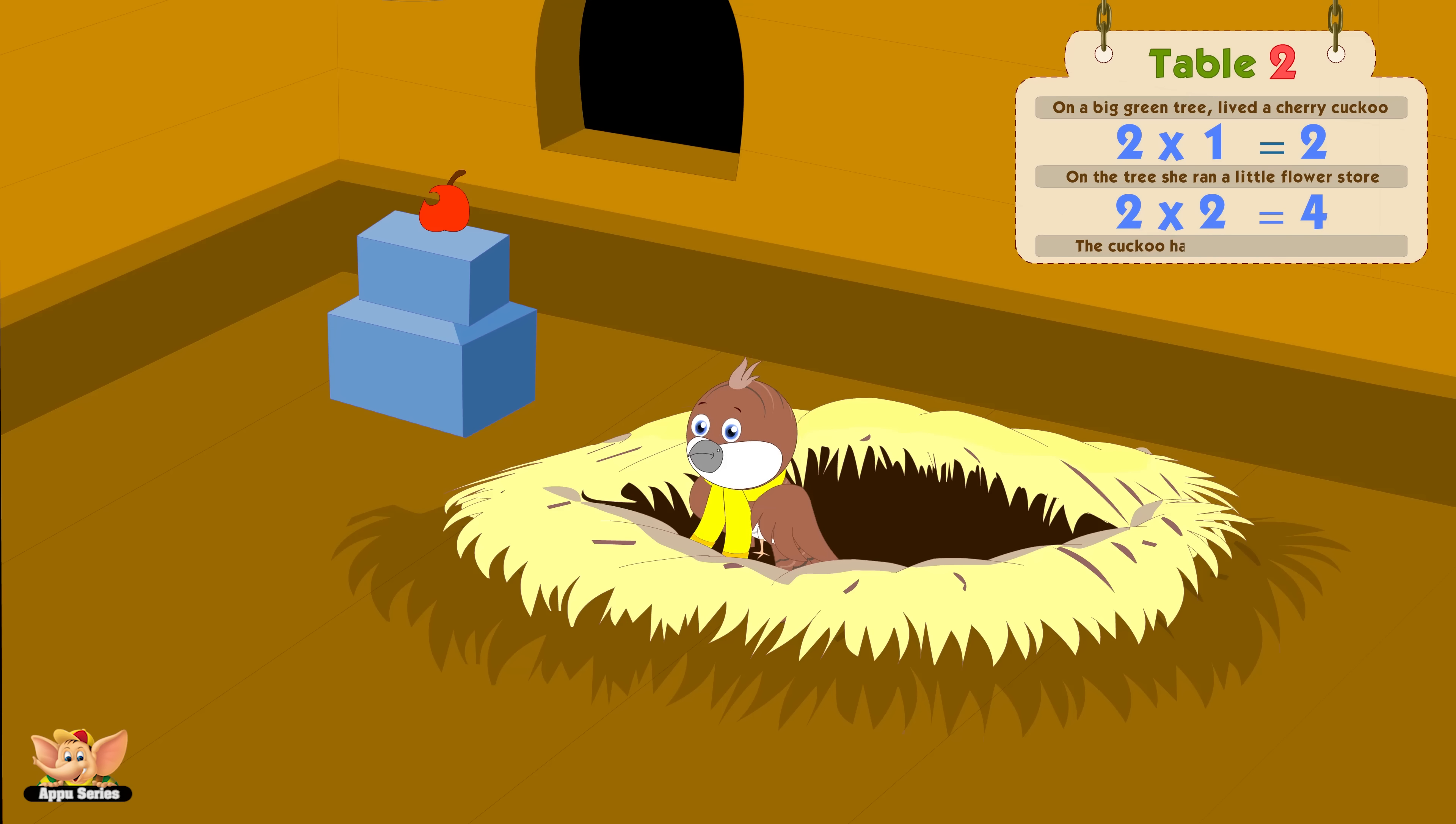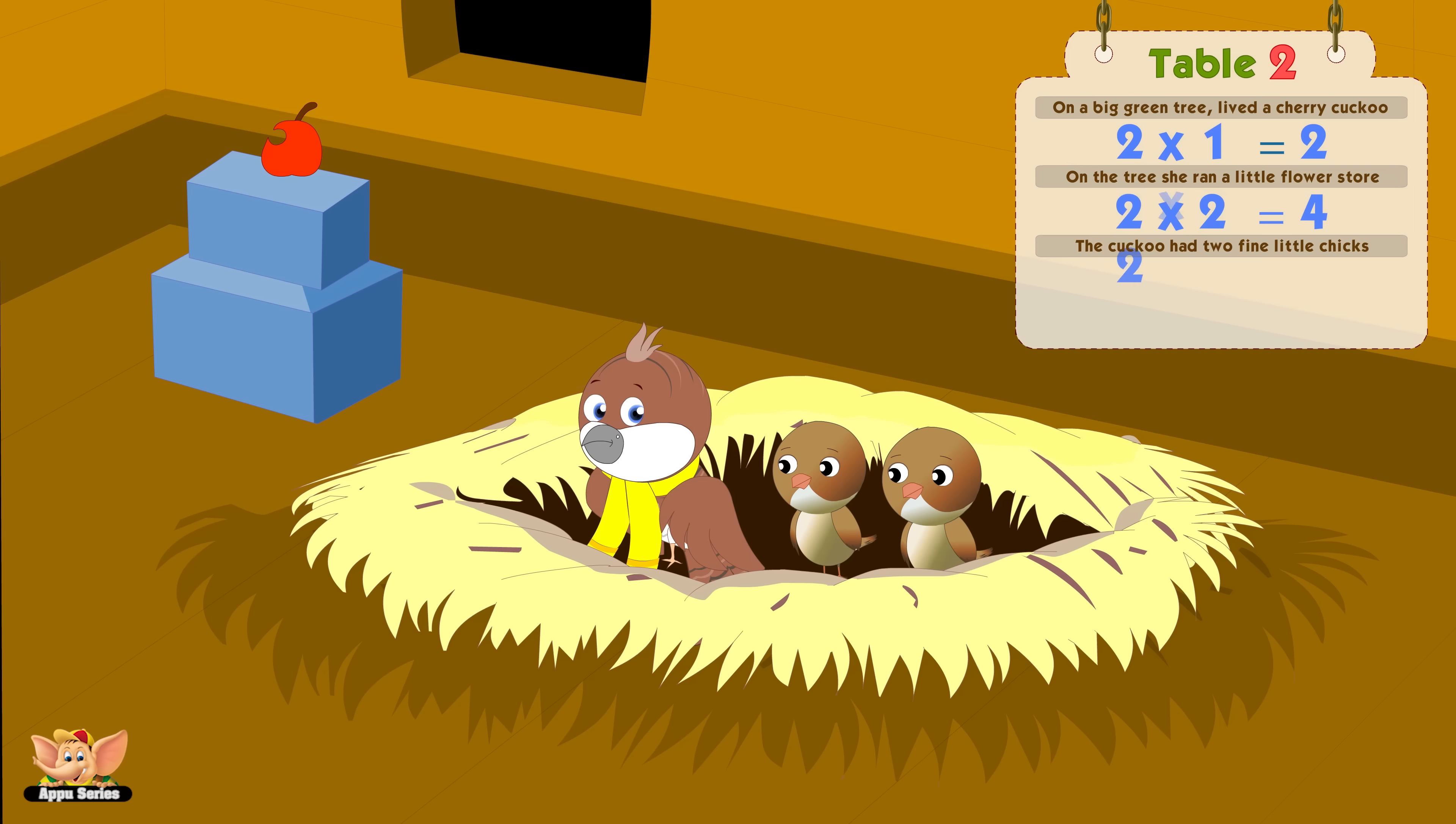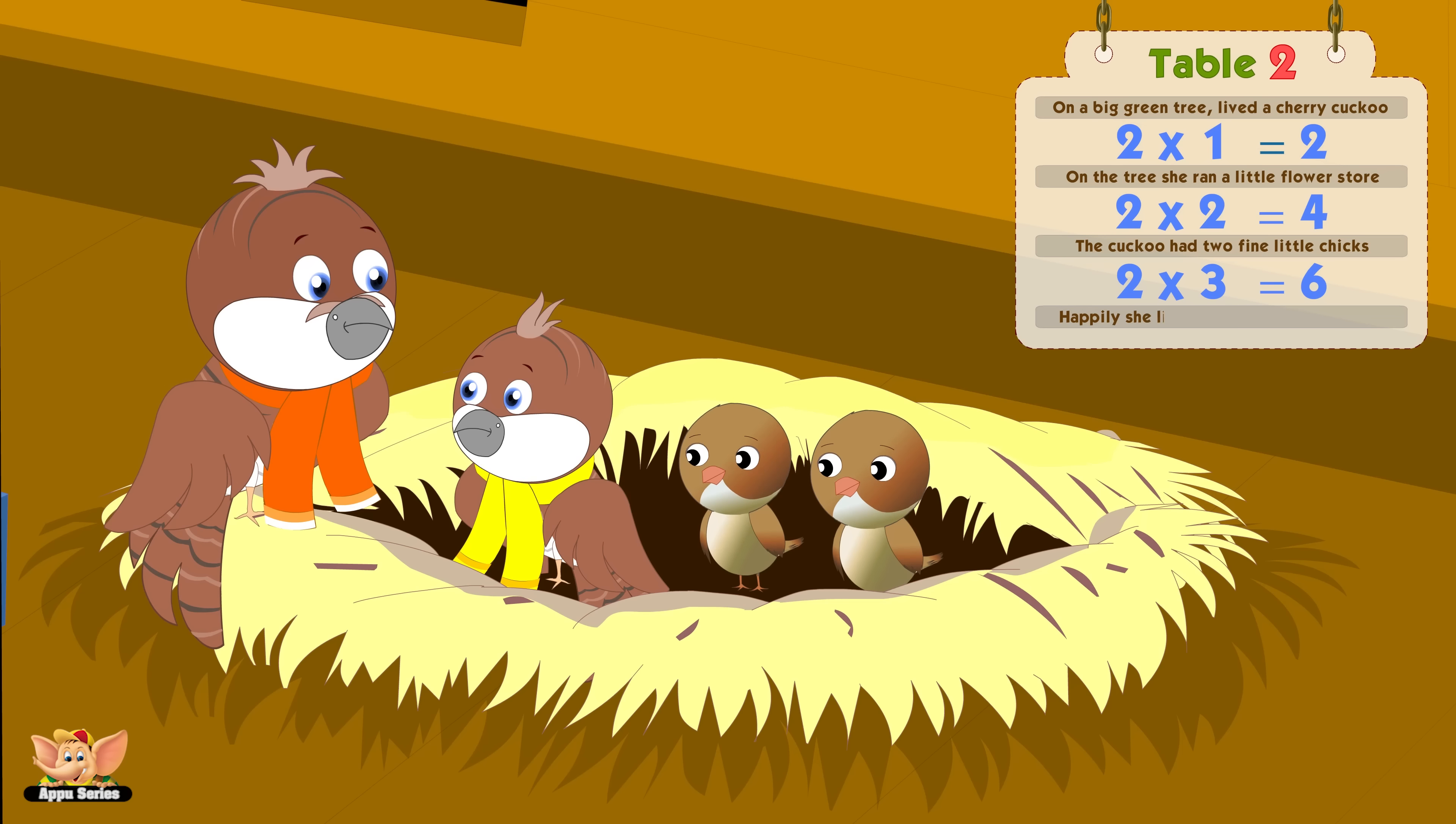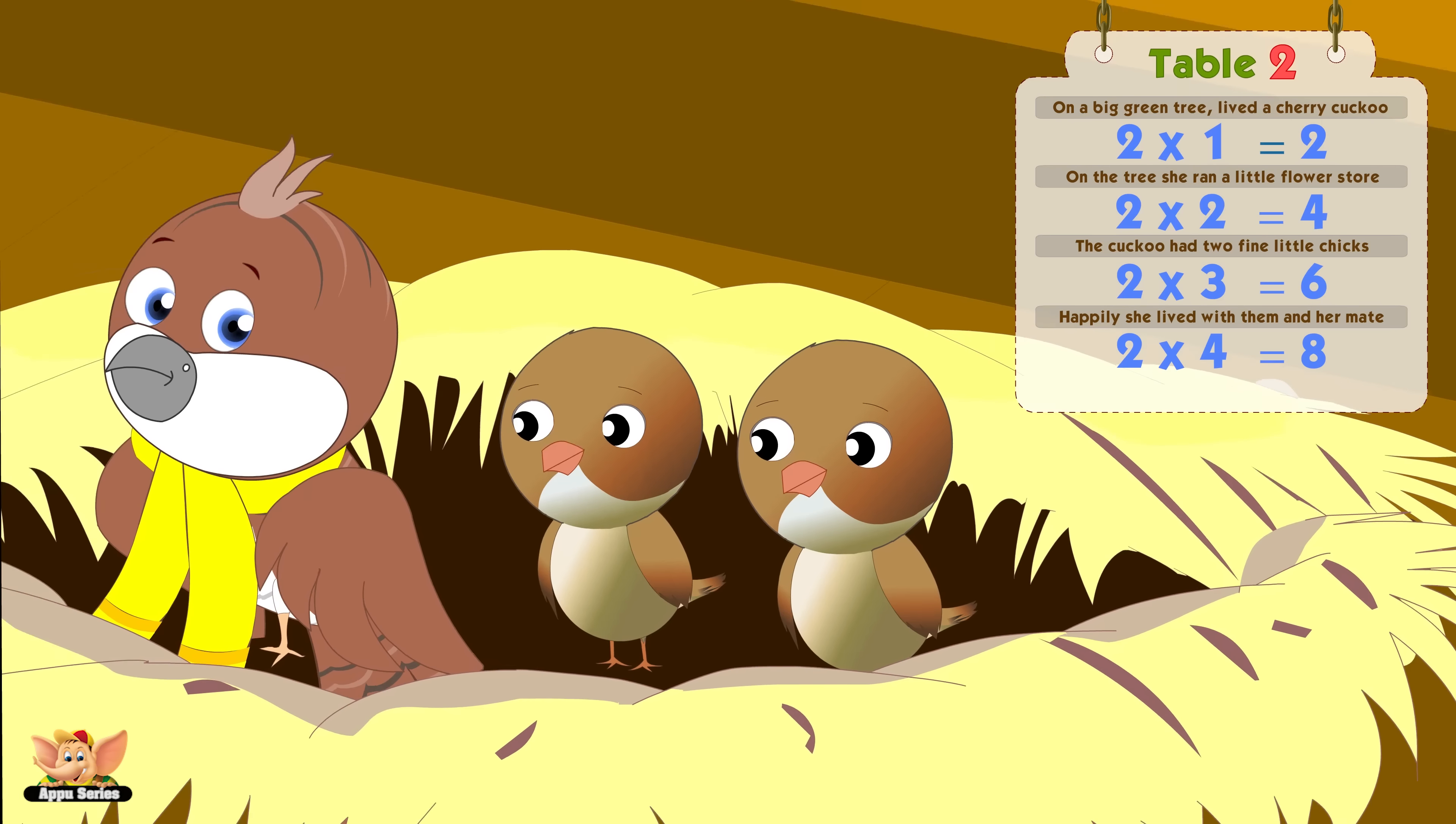The cuckoo had to find little chicks. Two threes are number six. Happily she lived with them and her mate. Two fours are number eight.